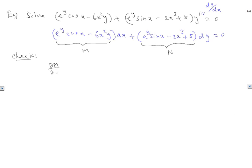We check exactness: ∂M/∂y = eʸcos(x) - 6x², and ∂N/∂x = eʸcos(x) - 6x². They are equal, so this is an exact equation.